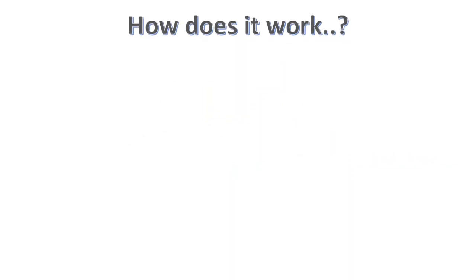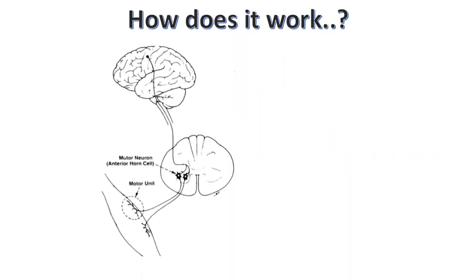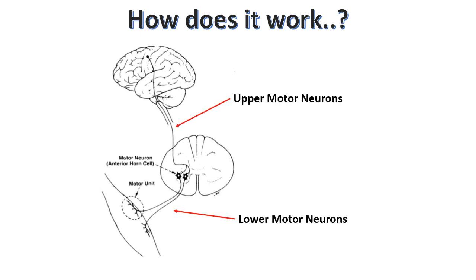Now, how does this system work? Signals are sent from the brain through upper motor neurons, which in turn control the lower motor neurons. In short, lower motor neurons are controlled by upper motor neurons. With this concept in mind, let's see what happens when there is a lesion in either the upper or lower motor neurons.